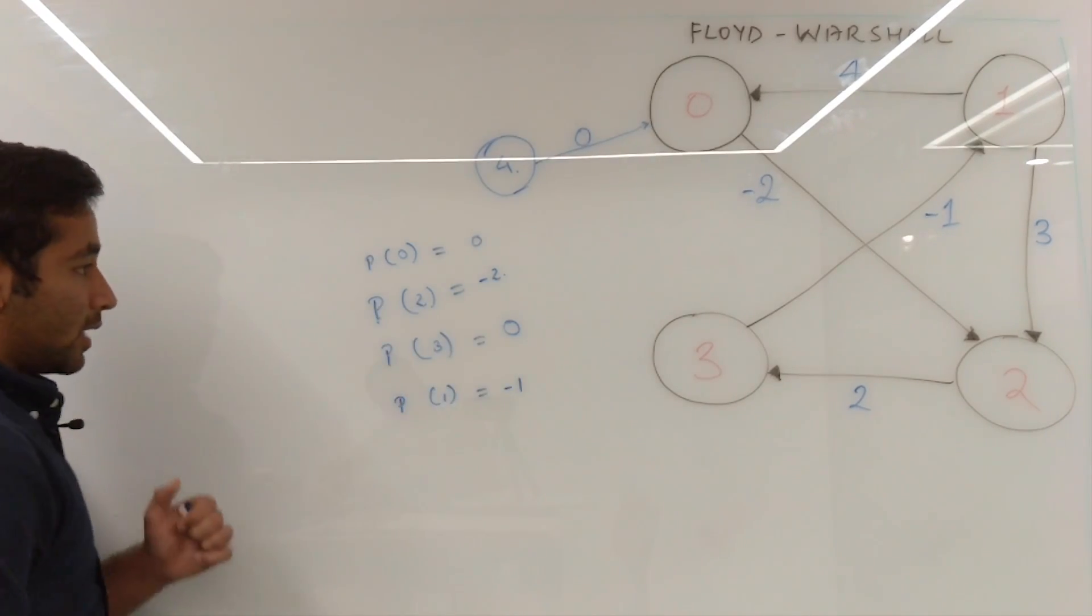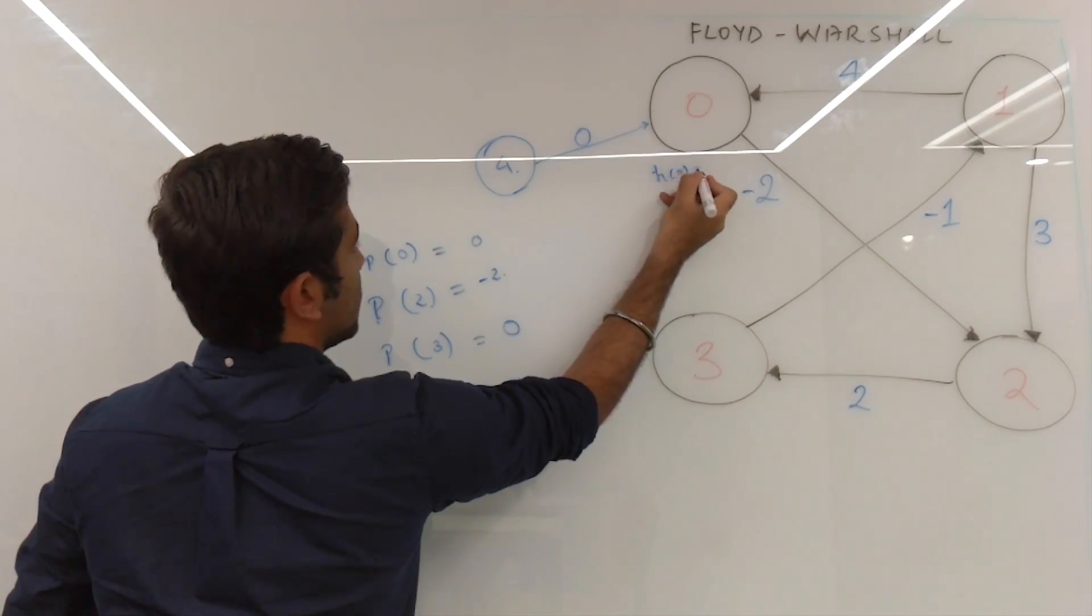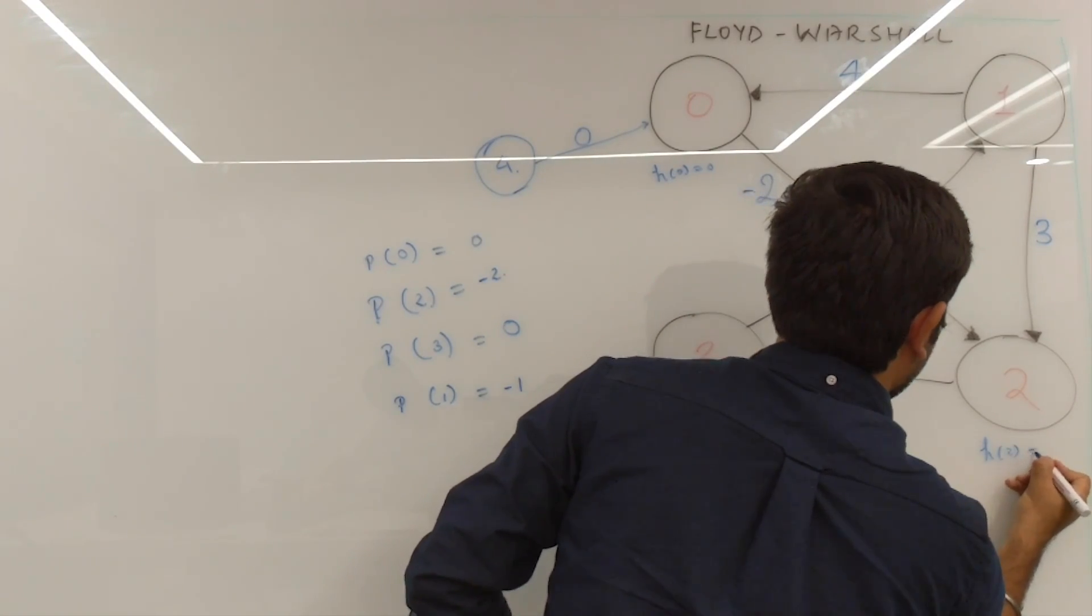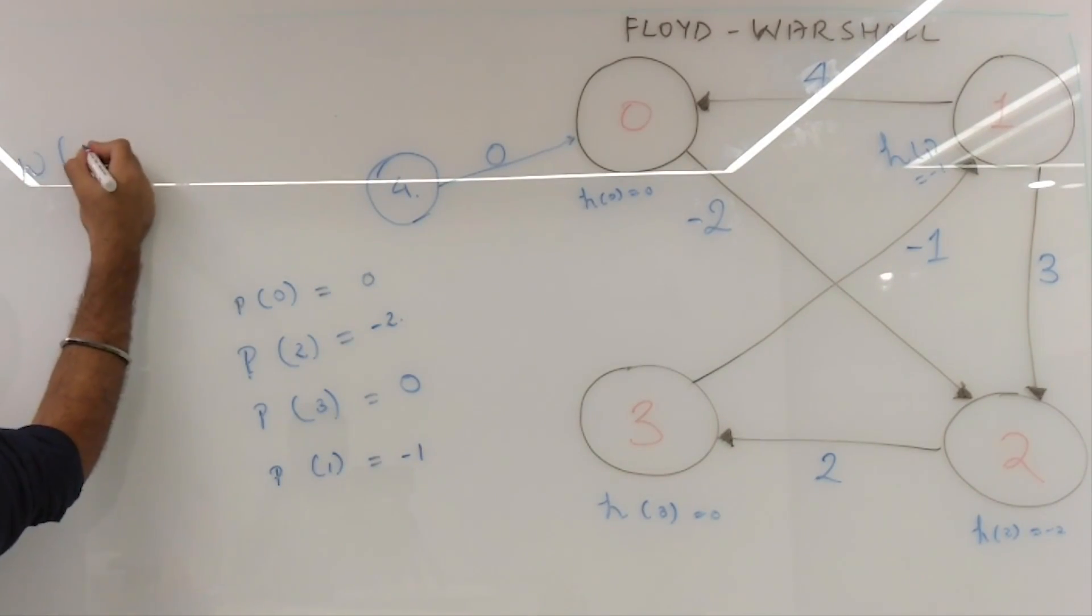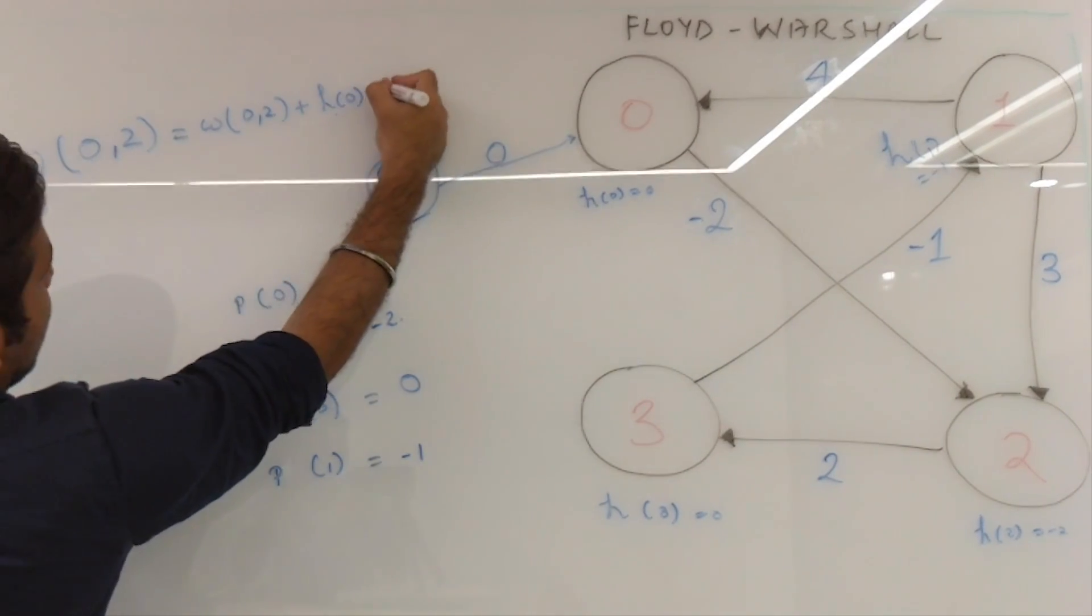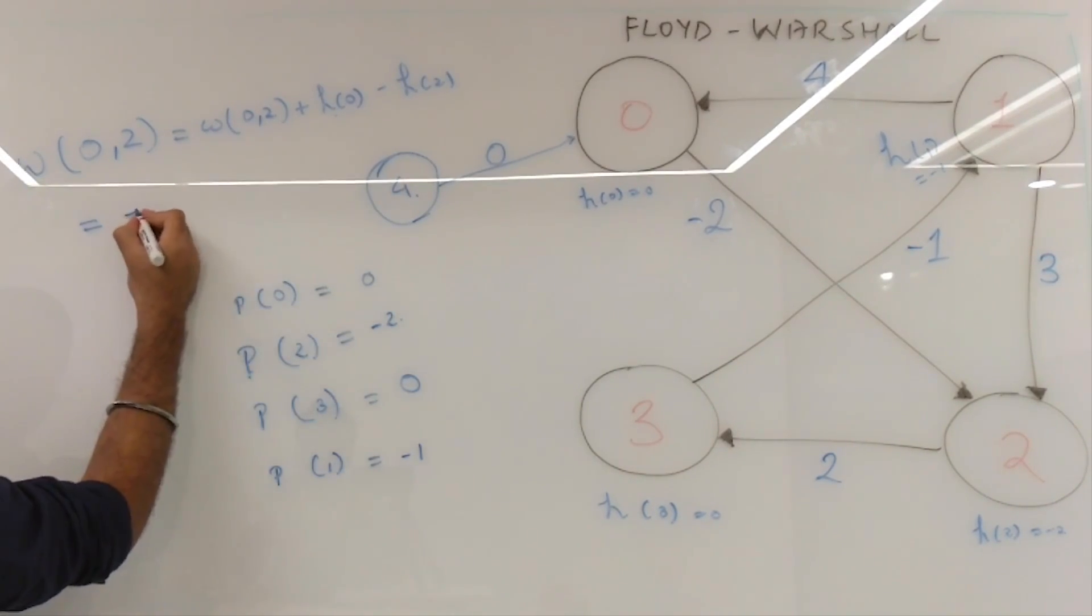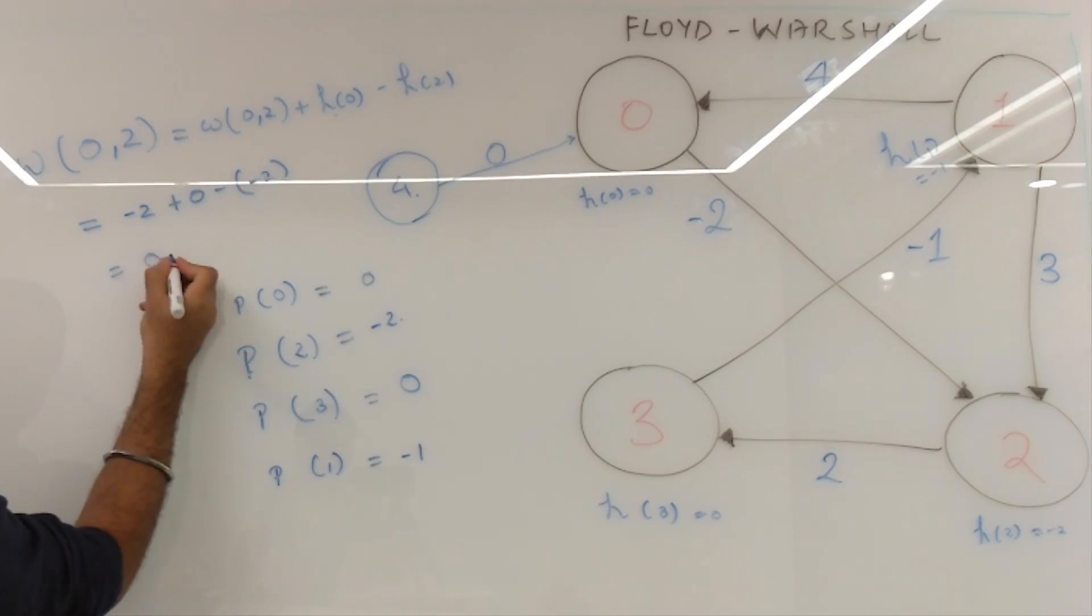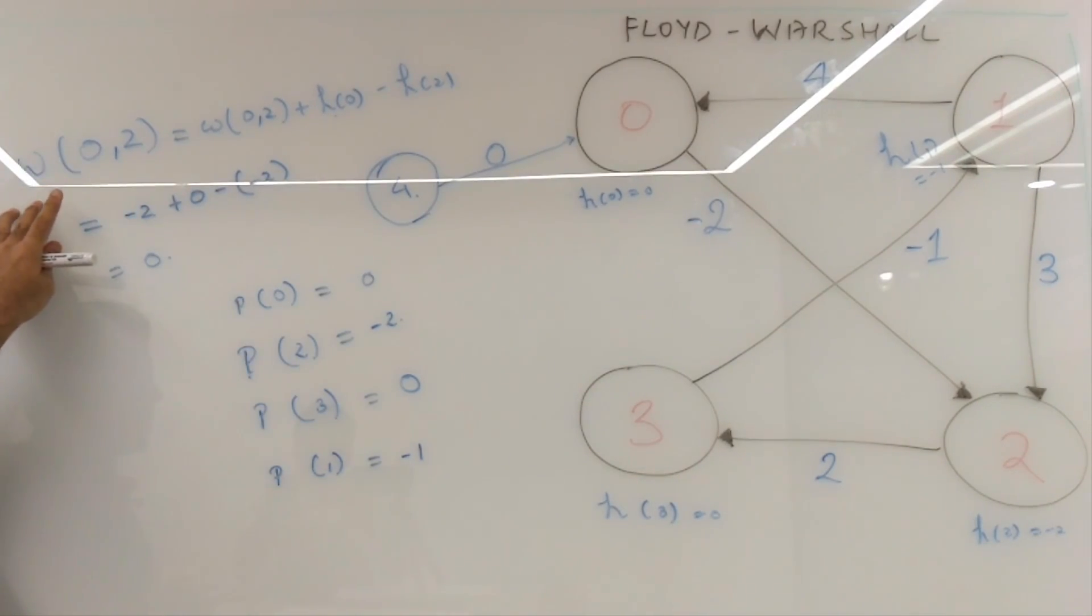In this way now you will reassign edge weights and how you will do is this. So suppose H0 is 0, H3 is 0, H2 is minus 2 and H1 is minus 1. So W is the previous edge weight which is minus 2 and H0 as you calculated is 0 minus H2 which sums up to 0 and similarly for all the edges we will calculate the same and create a new graph with these new edge weights and apply Dijkstra to it.